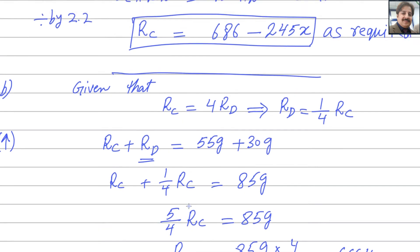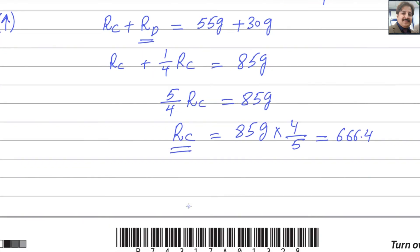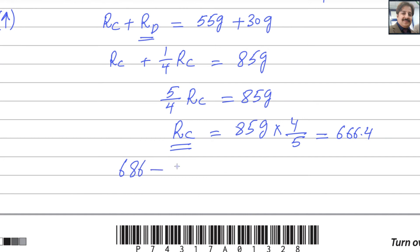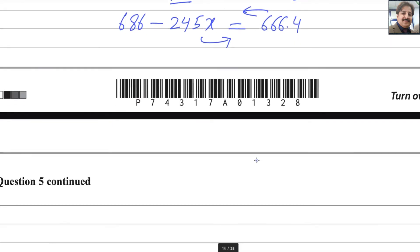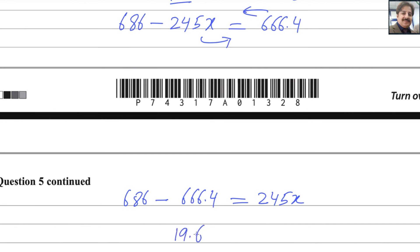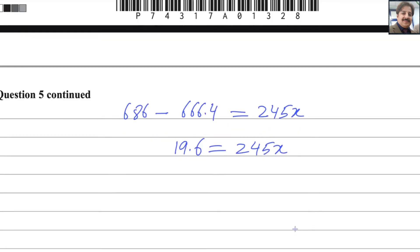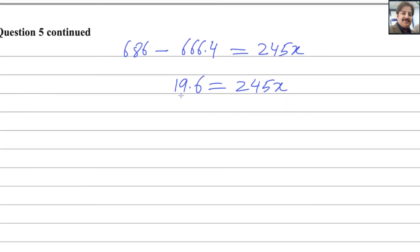Now substitute this value of Rc into the expression from part one: 686 minus 245x equals 666.4. Rearranging: 686 minus 666.4 equals 245x, so 19.6 equals 245x. Dividing by 245 gives x equals 0.08 m. Part B is done.